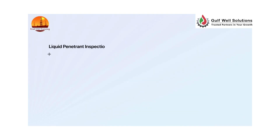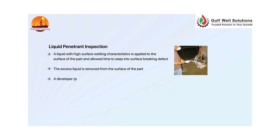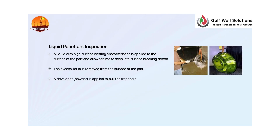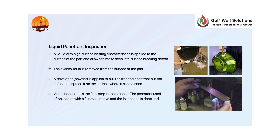In liquid penetrant inspection, a liquid with high surface wetting characteristics is applied to the surface of the part and allowed time to seep into surface-breaking defects. The excess liquid is removed from the surface. A developer powder is applied to pull the trapped penetrant out of the defect and spread it on the surface where it can be seen. Visual inspection is the final step. The penetrant is often loaded with a fluorescent dye and inspection is done under UV light to increase test sensitivity.